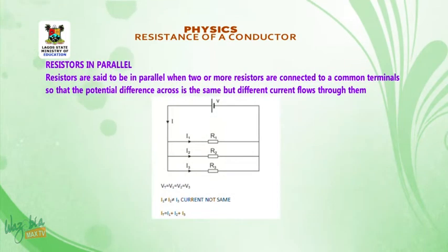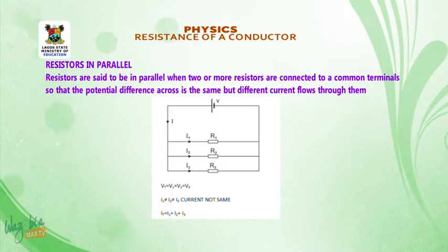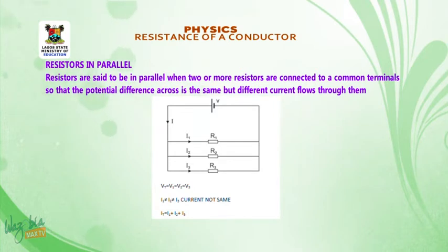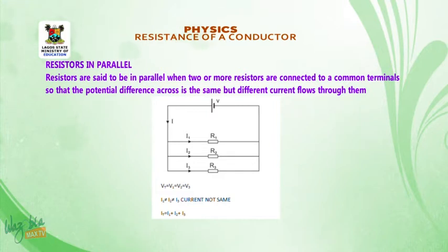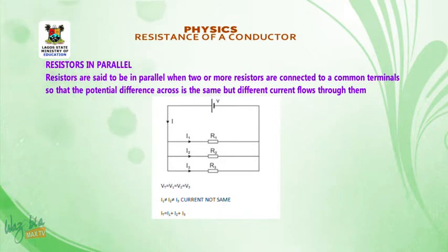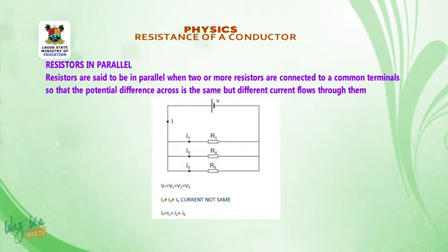Resistors connected in parallel: when resistors are connected in parallel, they are connected to a common terminal. The potential difference across each is the same, but different current flows through them. So V1 equals V2 equals V3, but the currents differ.